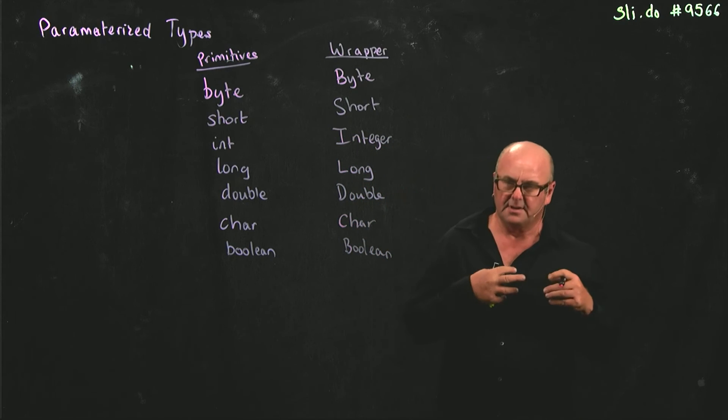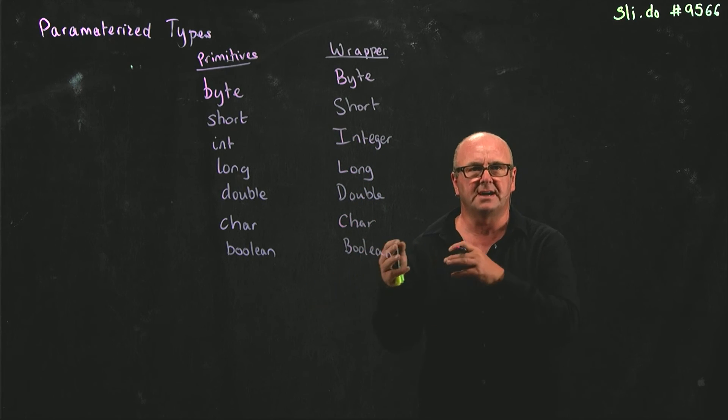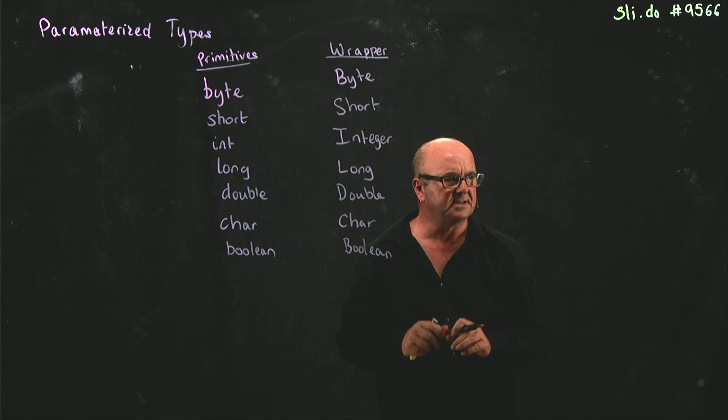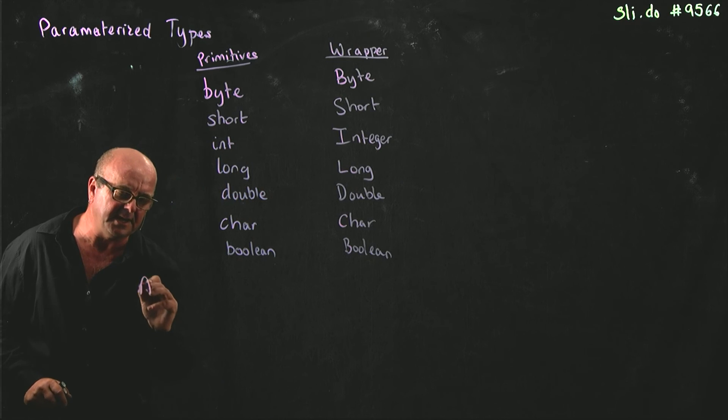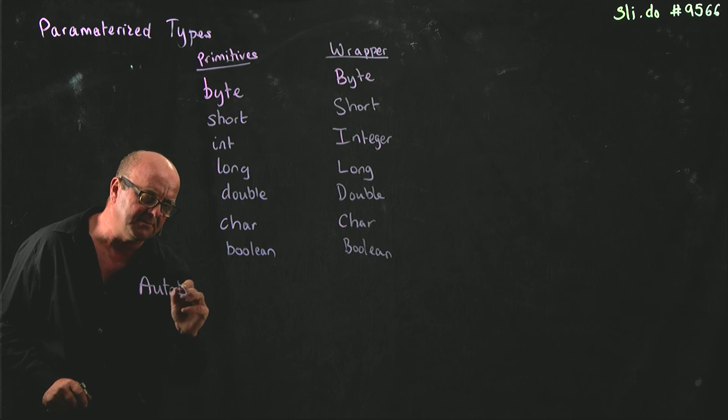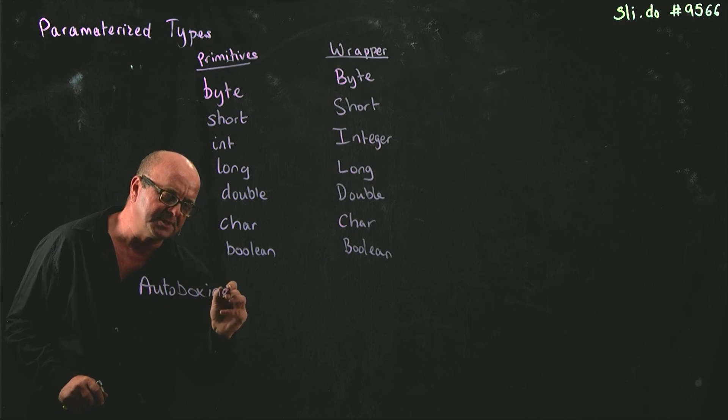So we have a primitive, and we have an object. And we can switch between them. And Java will try and do the right thing, switching between them via what's called auto-boxing.